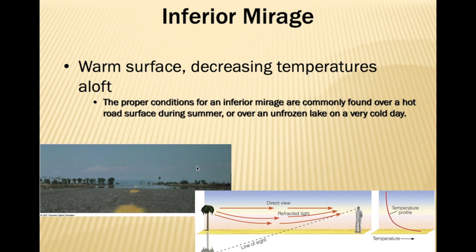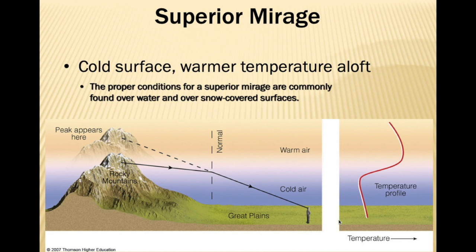The proper conditions for inferior mirages are commonly found over a hot road surface during summer or over an unfrozen lake on a very cold day — the image formed is inverted in nature. In superior mirages, things appear higher than the original. This occurs when due to certain air masses, temperature increases with altitude instead of decreasing. When light coming from the peak of a mountain travels first through warm air then cold air, the higher density of the cold air mass diverts it toward the normal, making the peak appear higher.